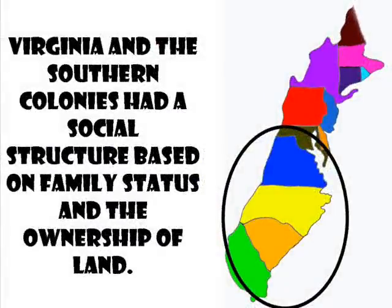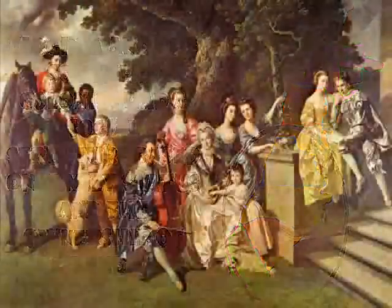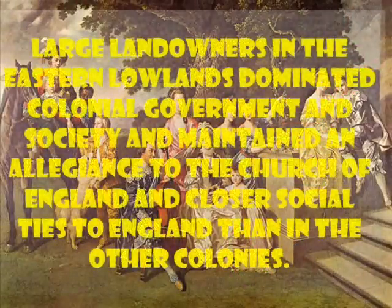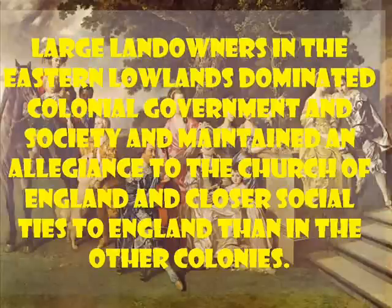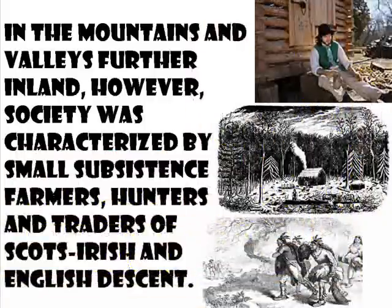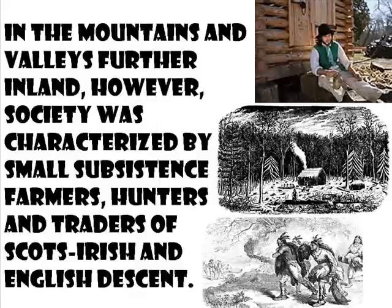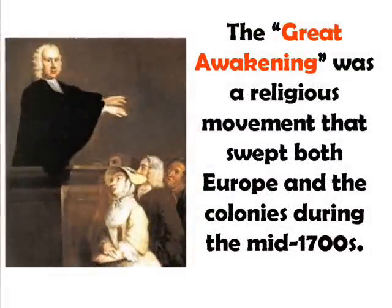Virginia and the southern colonies had a social structure based on family status and the ownership of land. Large landowners in the eastern lowlands dominated colonial government and society, and maintained an allegiance to the Church of England and closer social ties to England than the other colonies. In the mountains and valleys further inland, however, society was characterized by small subsistence farmers, hunters, and traders of Scots-Irish and English descent.